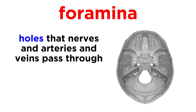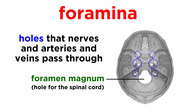We should also mention the foramina, which are holes that nerves and arteries and veins pass through, most notably the foramen magnum at the base of the skull, through which the spinal cord passes.